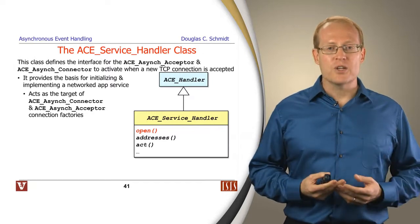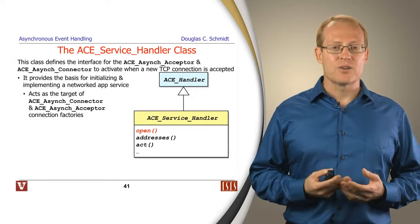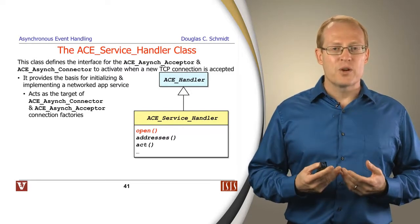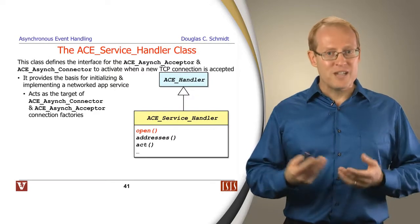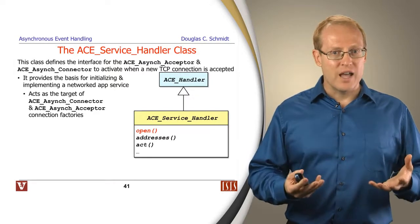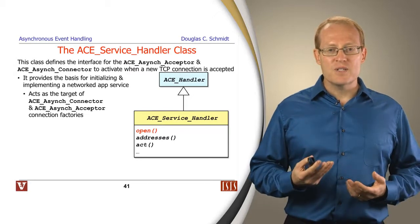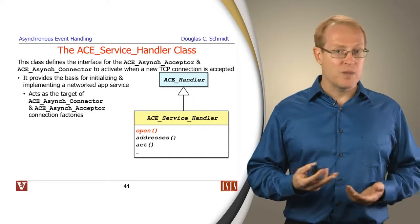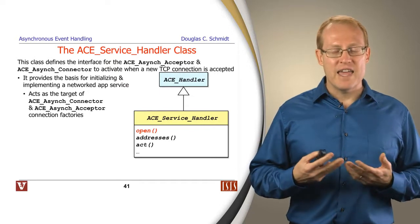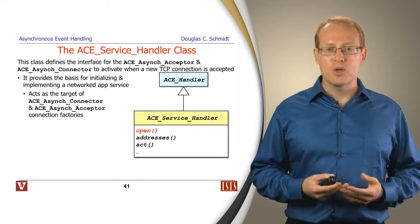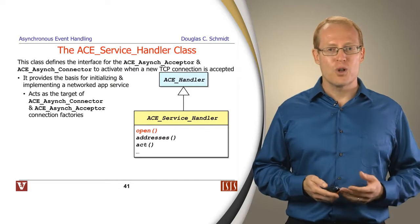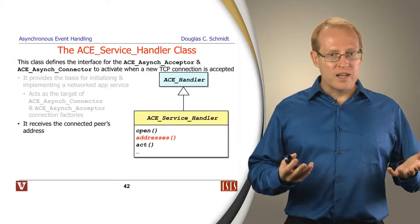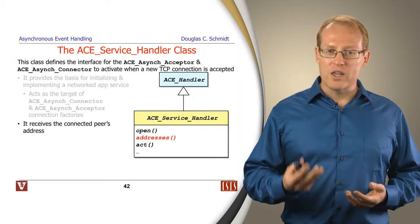We then for network communication have the ACE service handler class. This is the target of the ACE async acceptor and ACE async connector that are used to initiate connections actively and passively. When they're done, they initialize this ACE service handler. The ACE service handler provides a way to activate a service to do something, typically to run things in some kind of asynchronous way, although you could spawn threads if you chose to. It's up to you because you can control how those hook methods are overridden in subclasses. It also allows you to figure out who the connected peer is, what their addresses are, which you may want to use for various purposes, such as to figure out if you want to communicate to this peer at all.